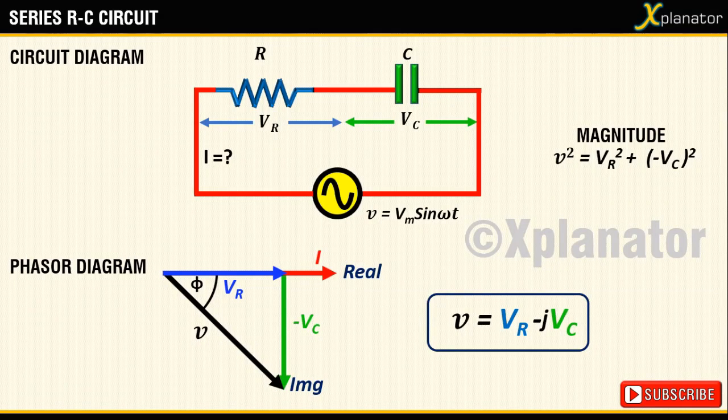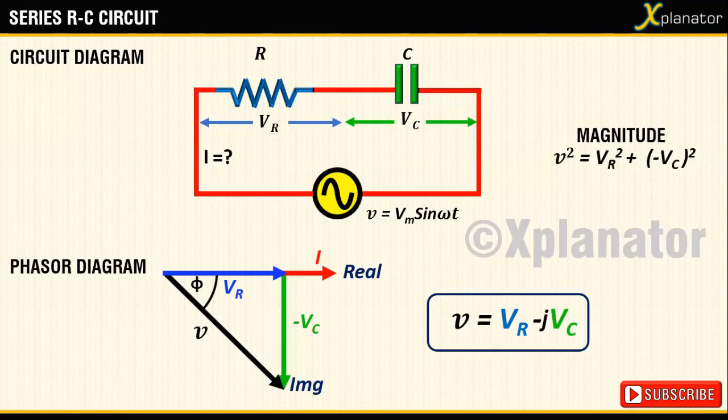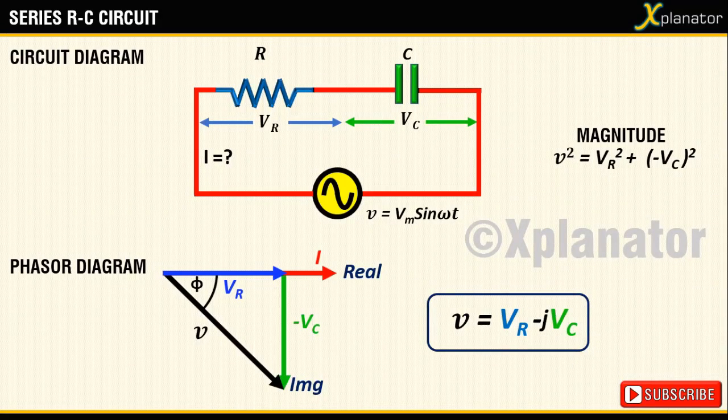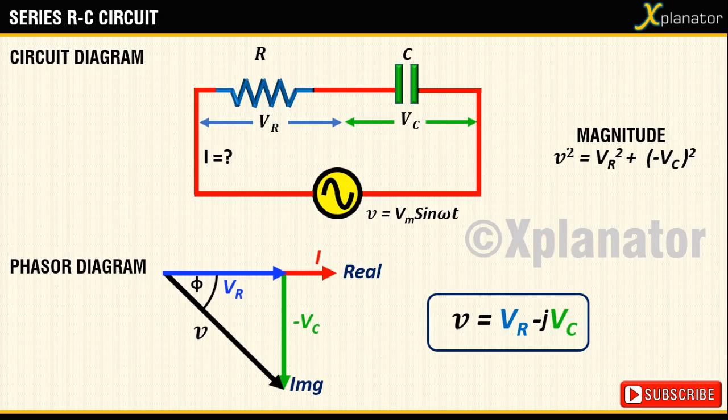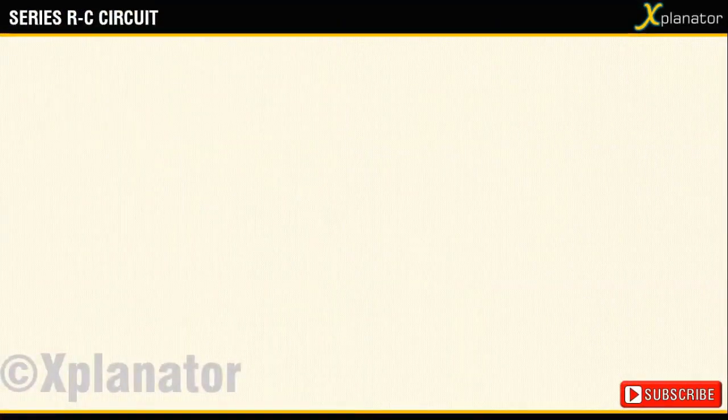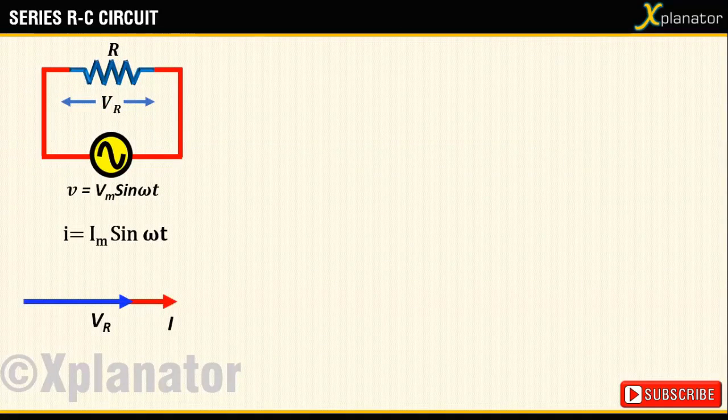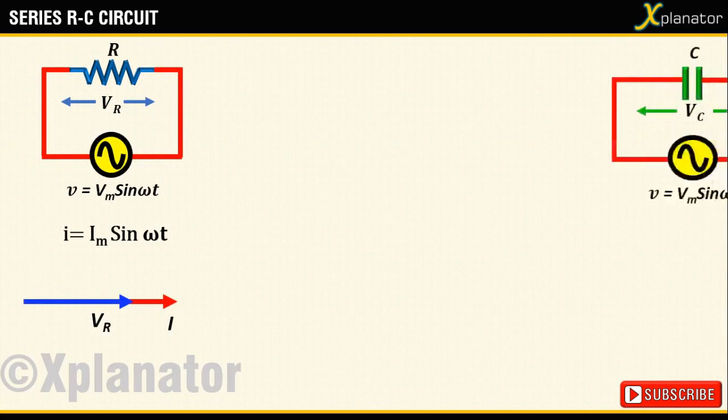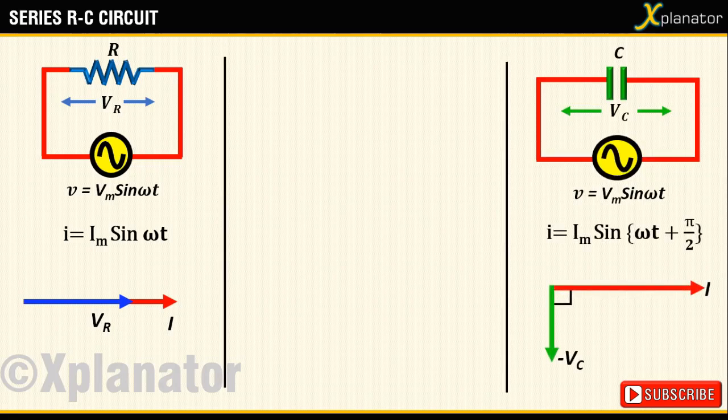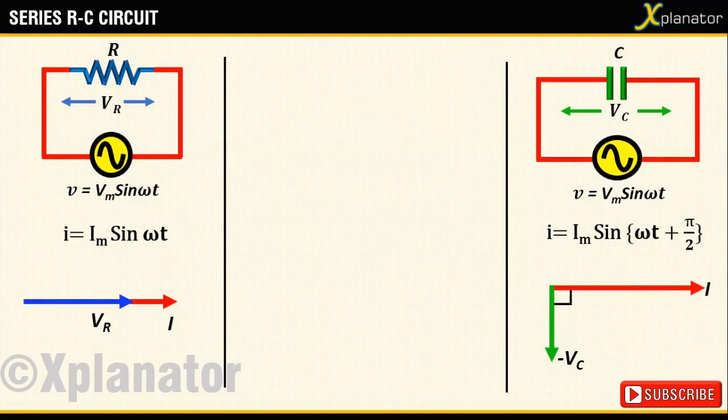Before writing the equation for current, take a quick recap of how phasor diagram and the equation for current in a pure resistive and pure capacitive circuit are represented. You can see that in a pure resistor V and I are in phase, while in a purely capacitive circuit they are 90 degrees apart.